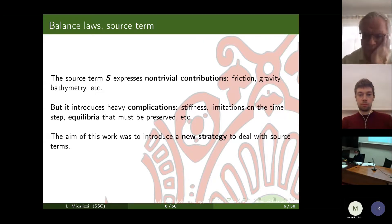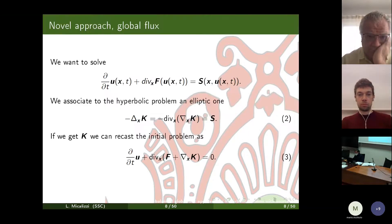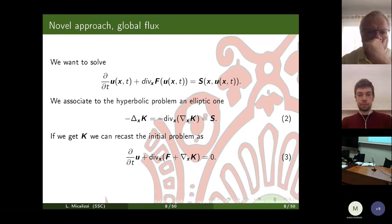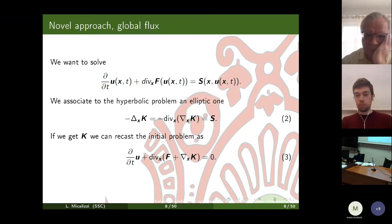The aim of this work was to introduce a novel strategy to deal with source terms. We start from our initial problem and couple it with an elliptic problem. If we find such k, we can plug its gradient inside the divergence and go from our initial problem to an equivalent homogeneous one — with no source term. This is a global flux approach, keeping the source term within a global flux.